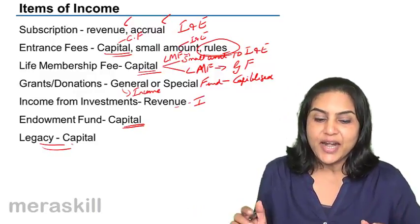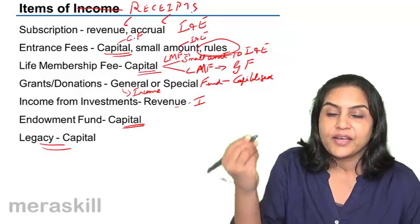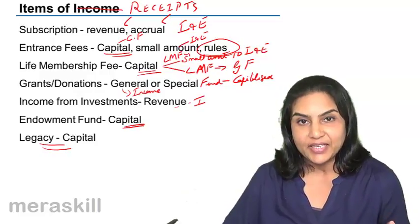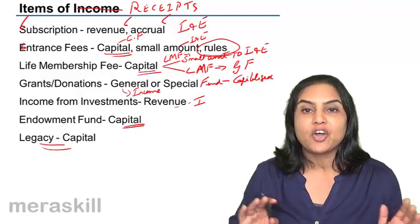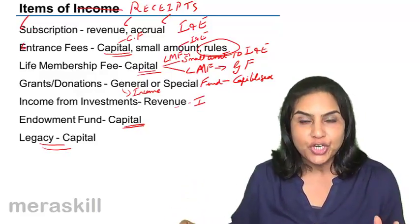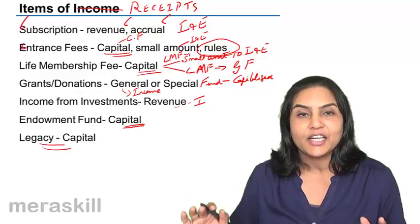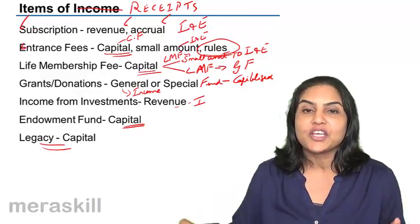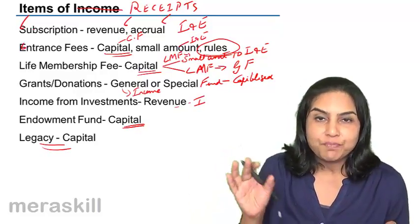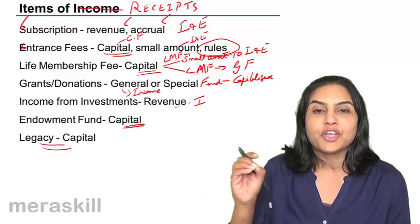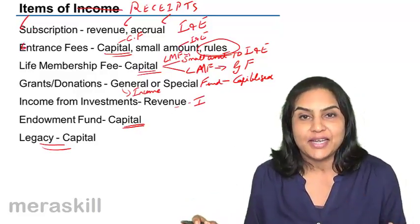To summarize, these are all items of receipts and we must decide whether each is income or a capital item. Subscriptions are revenue. Entrance fees could be capital or revenue depending on the rules of the organization — if it is a large amount, it is normally capitalized, but when the amount is small and the rules specify, it may be taken to the income and expenditure account. Logically, entrance fees are paid only once and are therefore capital in nature, but the rules of the organization determine the treatment. Very often, half of it is capitalized and half is taken as revenue.